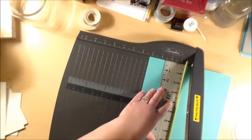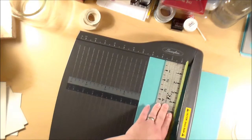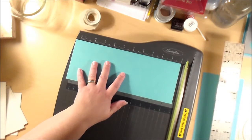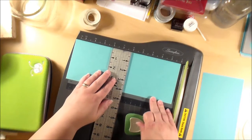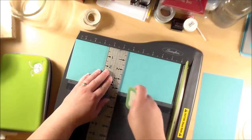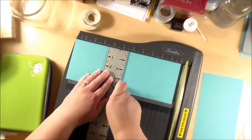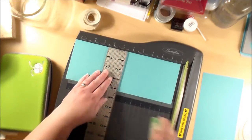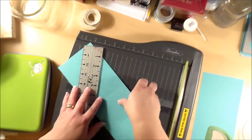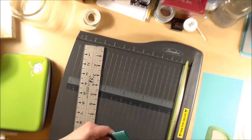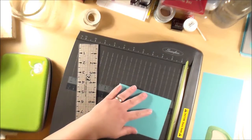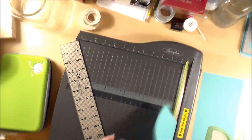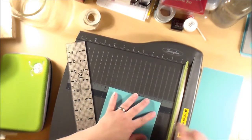I started by cutting my cardstock to four and a quarter by eleven length, then gave it a score in the middle. I'm almost always off by just a little bit, so I folded it, gave it a good crease, and then trimmed off that little bit that was hanging over the end. It's a lot easier than trying to re-crease it, which never looks right.